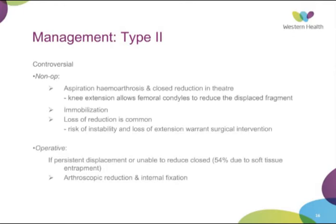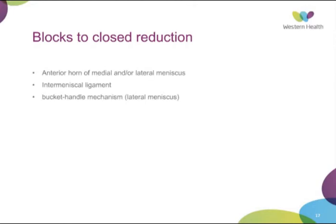At the time of reduction in theatre, if there's persistent displacement or inability to reduce — which occurs 54% of the time due to interposition of soft tissues — arthroscopic reduction and internal fixation is warranted. The typical blocks to closed reduction are the anterior horns of either the medial or lateral meniscus, the intermeniscal ligament, or a bucket-handle mechanism of the lateral meniscus, where the anterior horn of the lateral meniscus comes free from its insertion but remains attached to the ACL. As the ACL displaces upwards with the fragment, the lateral meniscus has a bucket-handle effect and gets stuck within the fragment.